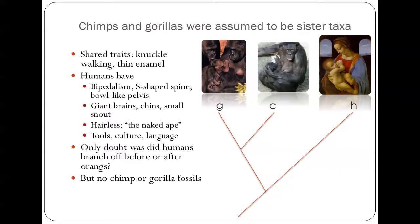It's obvious that these two are closely related to each other, and we're a branch out here. They have these clear shared traits. They have knuckle walking. Teeth are different. They have thin enamel. Humans have a lot of derived traits, which are not shared by these others. We have bipedalism, S-shaped spine, bowl-like pelvis, giant brains, chins, small snouts. We're hairless. And of course, the thing that makes us not animals, in one sense, is that we have tools, we have culture, we have language. So the question when you first look at this issue, in terms of intuition, is, did we branch off before the orangutans, or did we branch off afterwards? One caveat, though, is that we don't have any fossils of gorillas or chimps. Side point is one chimpanzee tooth, but that's about it in terms of the fossil record.